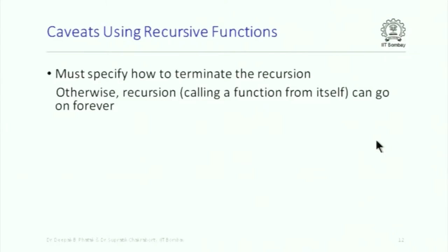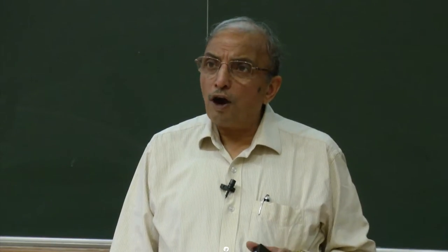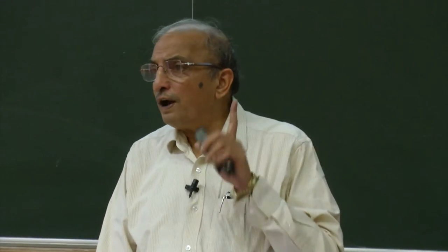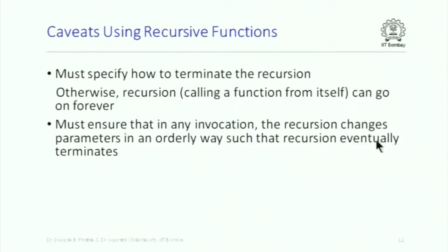So here are some caveats or rules. Number one: you must specify how to terminate the recursion, otherwise it can go on forever. It is as hard to spot an endless recursion as it is to spot an endless iteration — both require careful thinking. You must ensure that in any invocation the recursion changes parameters in an orderly fashion, such that the recursion eventually terminates. That is the responsibility of the person who writes the function.